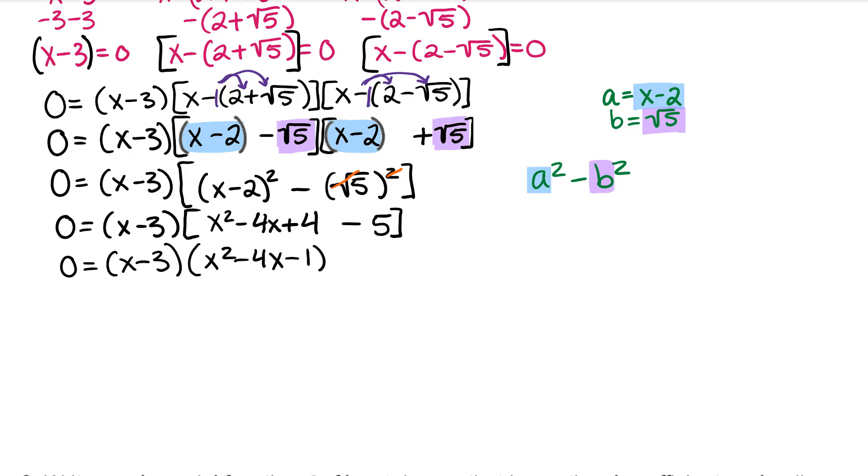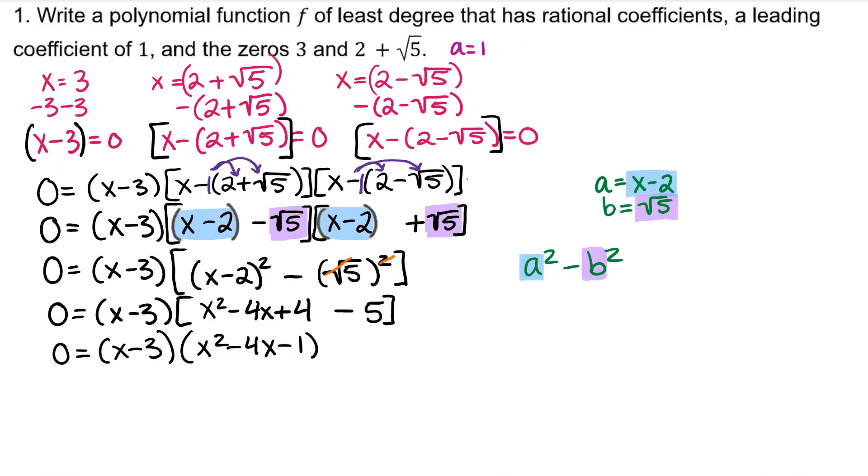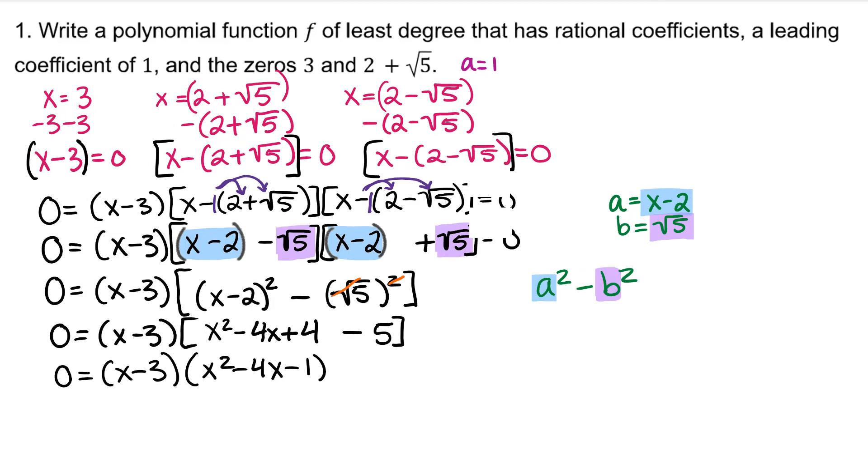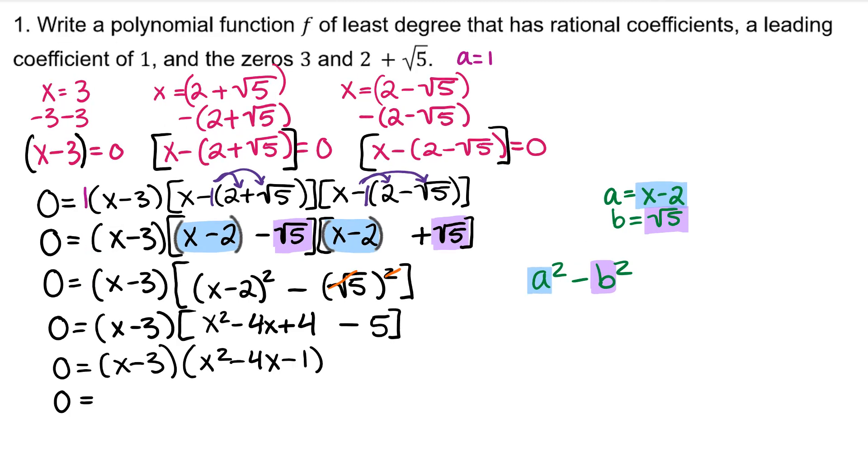After simplifying, we have this binomial times a trinomial. Now you may have wondered, what did we do with a equals 1, our leading coefficient? Well, that whole time, if they give you a leading coefficient, that leading coefficient needs to be multiplied in front of these factors. But we don't have to write that, because 1 times anything is itself.